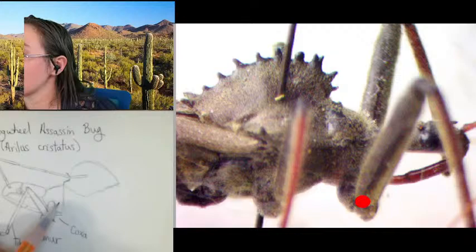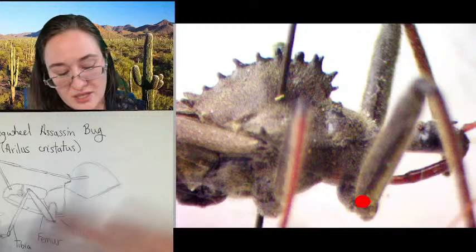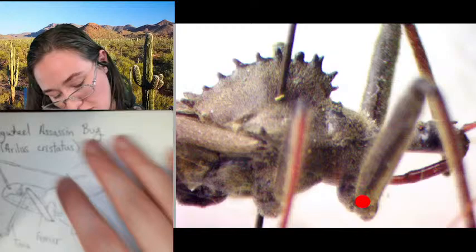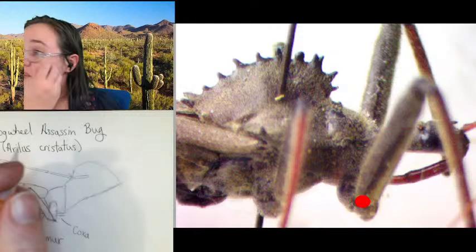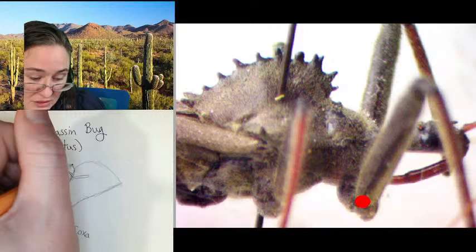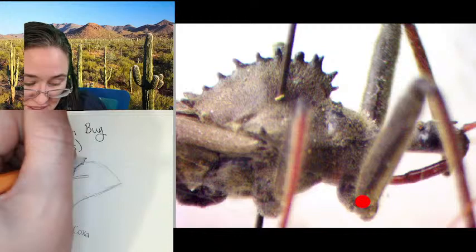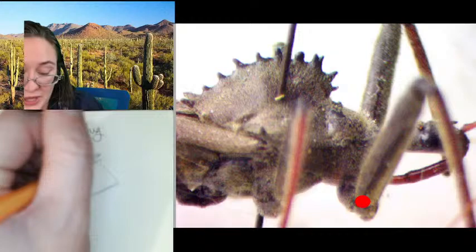There's this angle happening because of the way the wings are going to connect. Now I'm going to go back in and add these spines onto our wheel. They're not all even, which doesn't make it super easy to sketch, but it gives us a rough idea. Closing in on the end of the wheel, the spines get smaller and narrower.